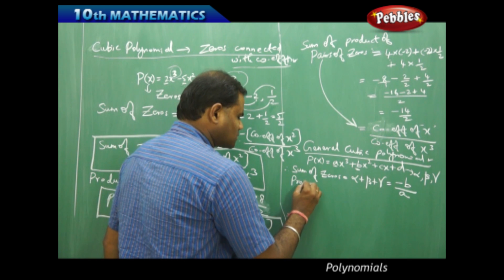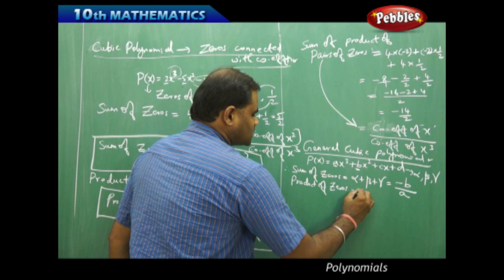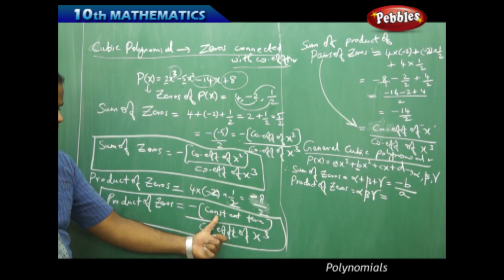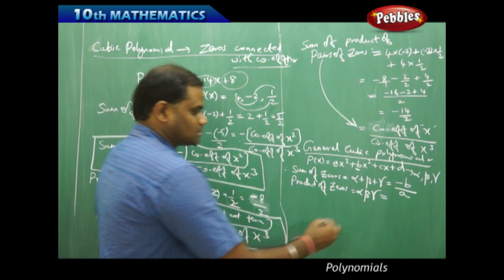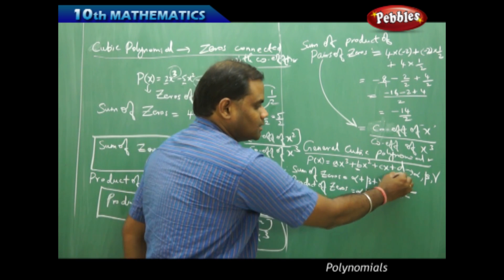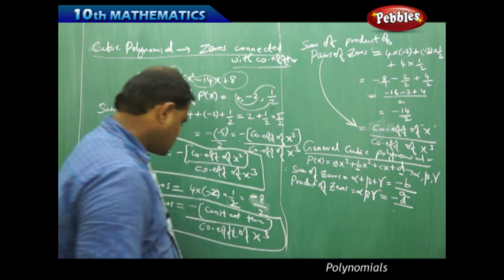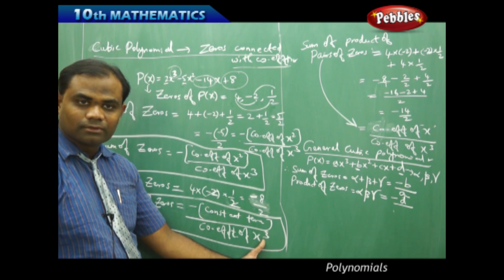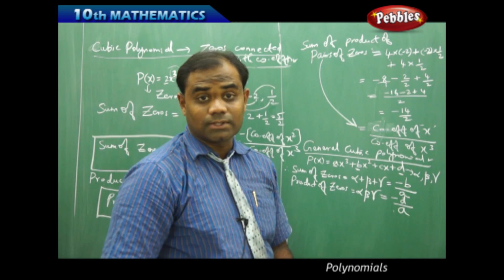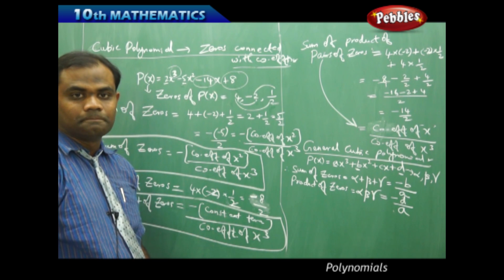Similarly, the product of zeros — alpha times beta times gamma — is given by the formula: minus of the constant term divided by the coefficient of x cubed. So that is minus D over A, using the respective formula.